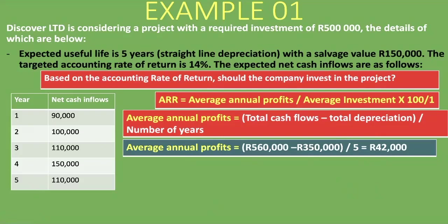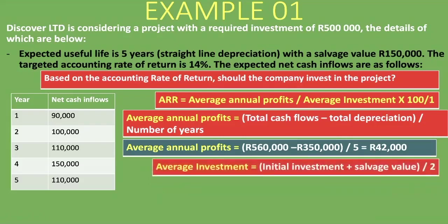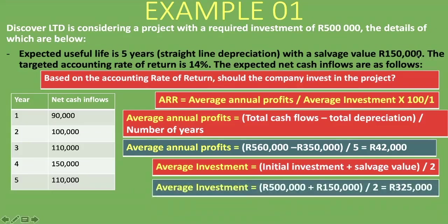The average annual profit is: total cash flows (R560,000) minus total depreciation (R350,000) = R210,000, divided by five years = R42,000. That is our numerator. For the average investment: R500,000 initial investment plus R150,000 salvage value = R650,000, divided by two = R325,000. Note: when calculating average investment you add the salvage value, then divide by two — that gives you R325,000.